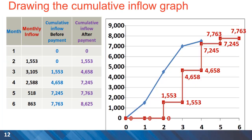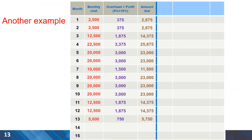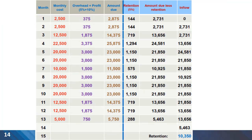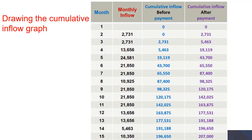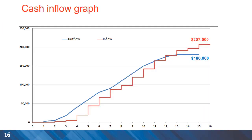We can use these values to plot the graph for cumulative inflow. As you can see, there is a jump from zero to $1,553, and then a jump to a cumulative amount of $4,658 at the end of month three, and so on. The final invoice is paid in month five and retentions are paid after the final invoice. There is another example project spanning 13 months, with monthly costs, and at the end of month 15 the retention of $10,350 is paid to the contractor. These values are used to draw the cumulative inflow graph shown in red.